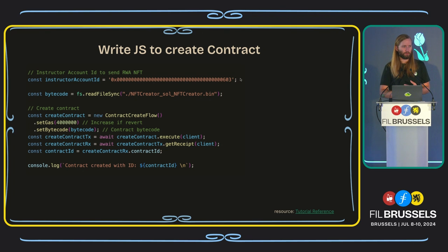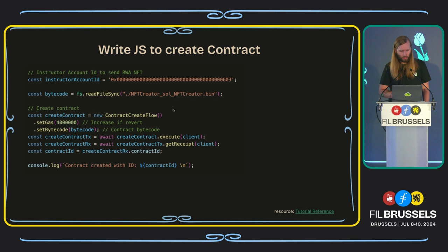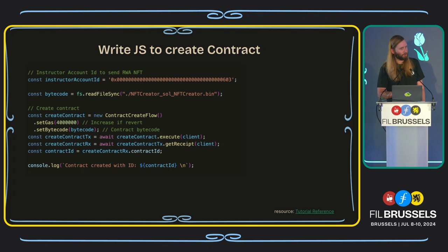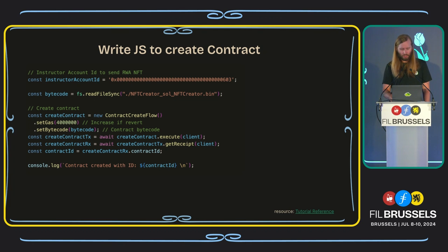When you interact with a smart contract, they typically need the EVM address of that account to send to. Then I'm going to read the bytecode of the contract we just wrote and compiled. From there, I'm going to create the contract in a new create-contract flow, set the gas, and set the bytecode. Execute that with an initialized client — use your new portal account from Hedera Testnet to init a client, and use that to execute this create-contract function. After that, we wait for a receipt back and get the contract ID, because we'll need it to execute the JavaScript and EVM functions on that contract.